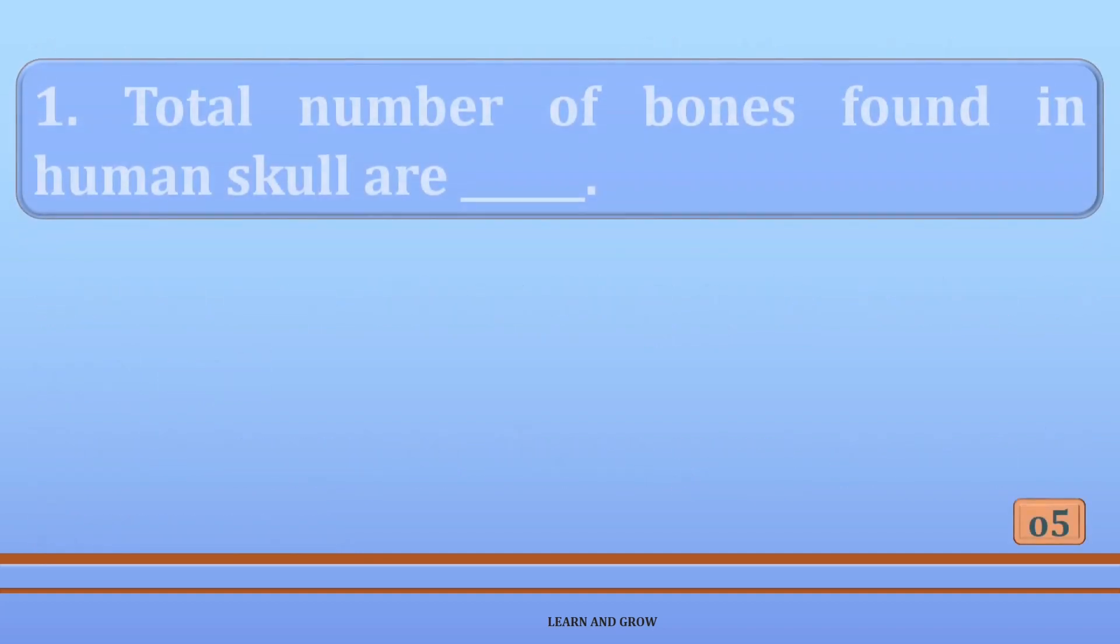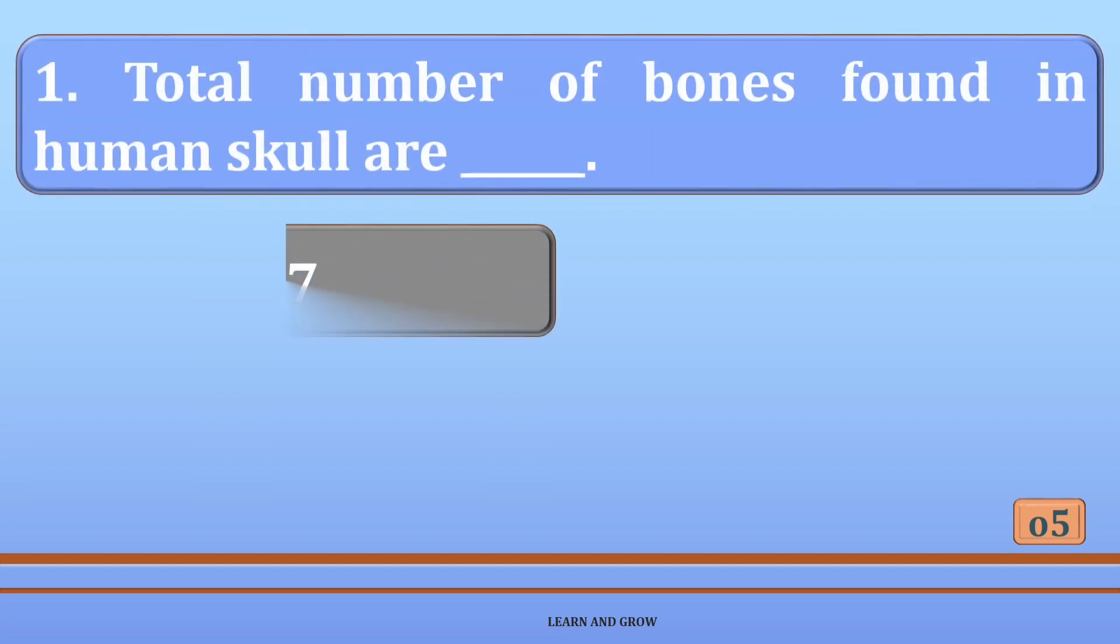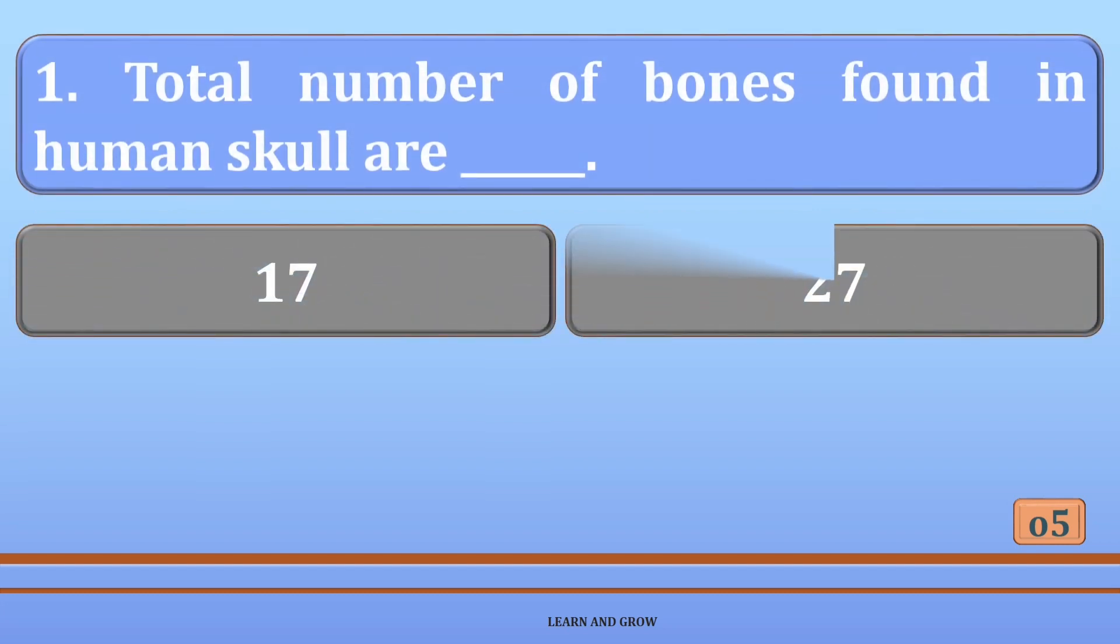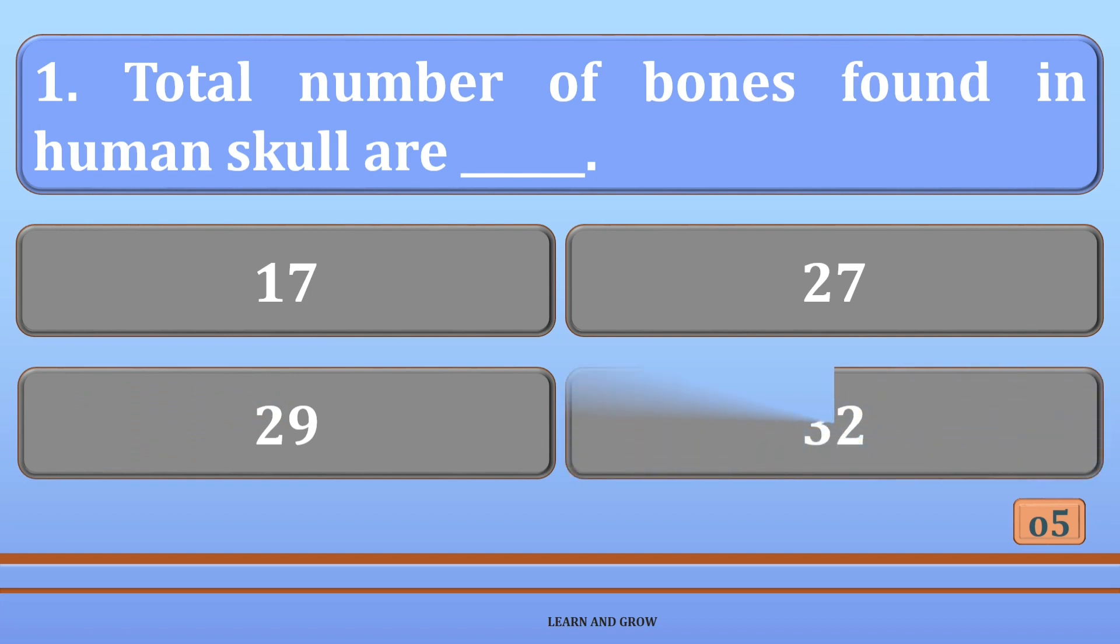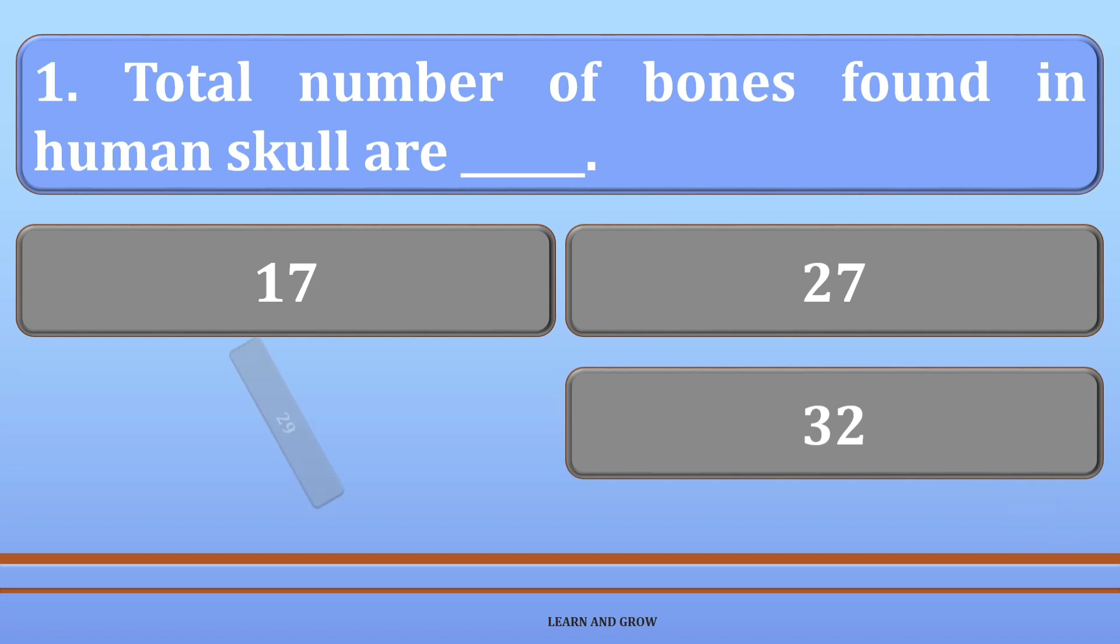Total number of bones found in human skull are: Option A: 17, B: 27, C: 29, or D: 32. The right answer is 29.